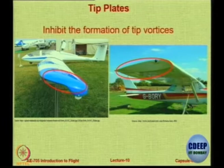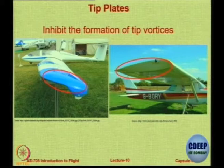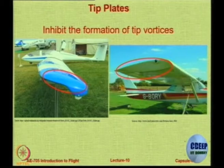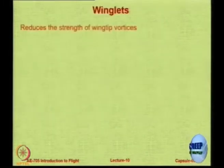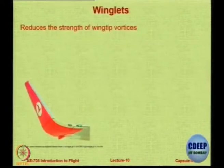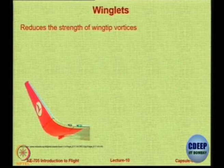One way is to put tip plates. The one on your left with the blue end is called a Horner wing tip — it was given by Sigmund Horner. And the one on the right is some kind of a device to reduce the wing tip vortex. The other way is winglets, which is very common, and most modern aircraft now you will see with winglets.